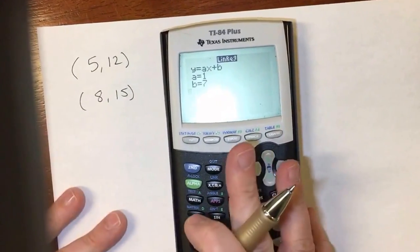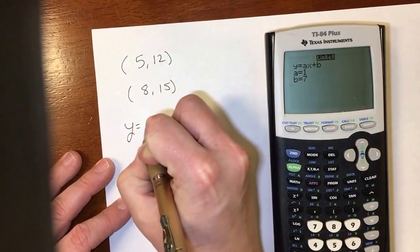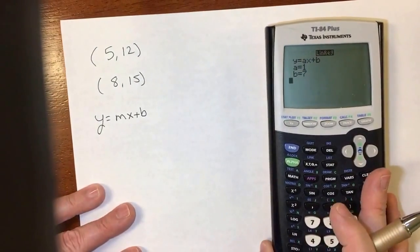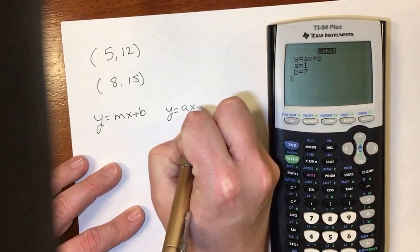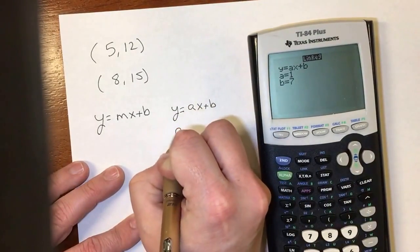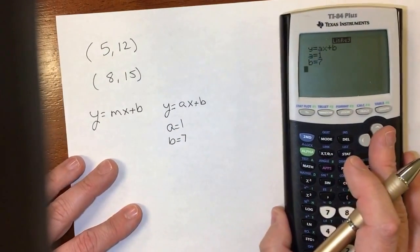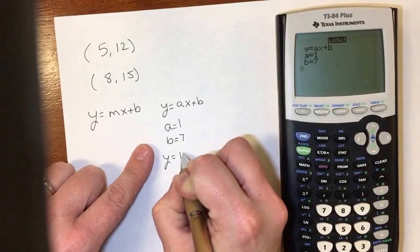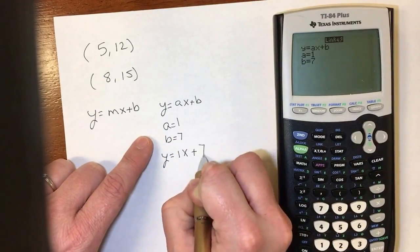Okay, so when I do equations, we write them as y is equal to mx plus b. But for whatever reason, the calculator writes it as y is equal to ax plus b. So the calculator says that the a is 1 and the b is 7. Well, I have to know that I'm going to replace the a with 1, because they're the same thing, and I'm going to replace the b with 7.